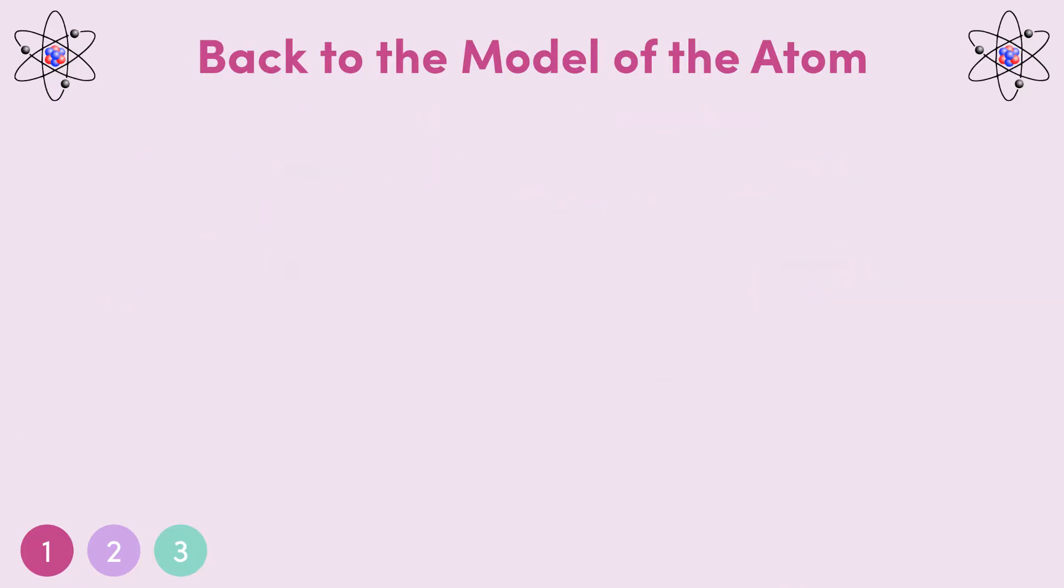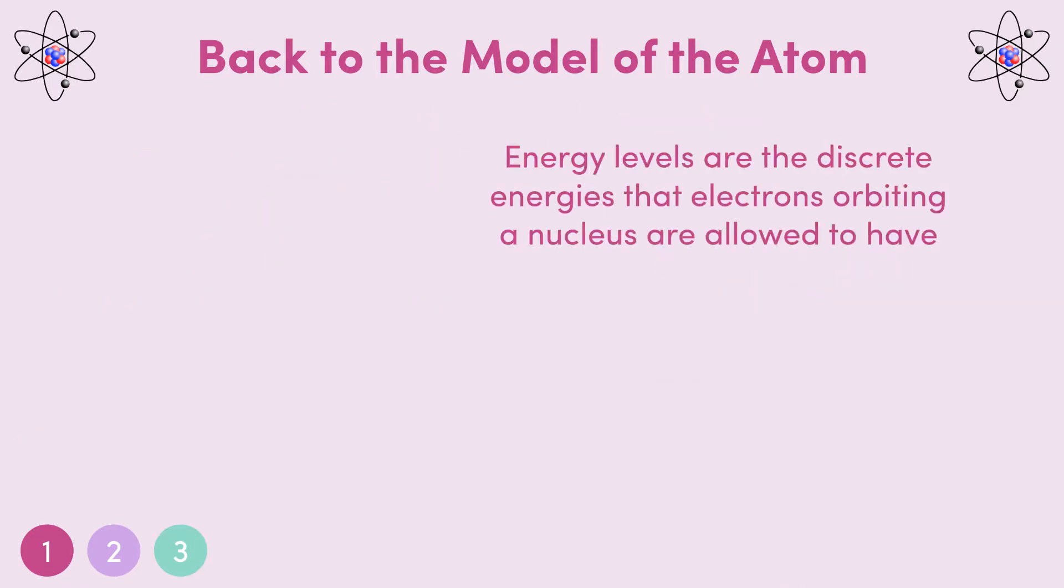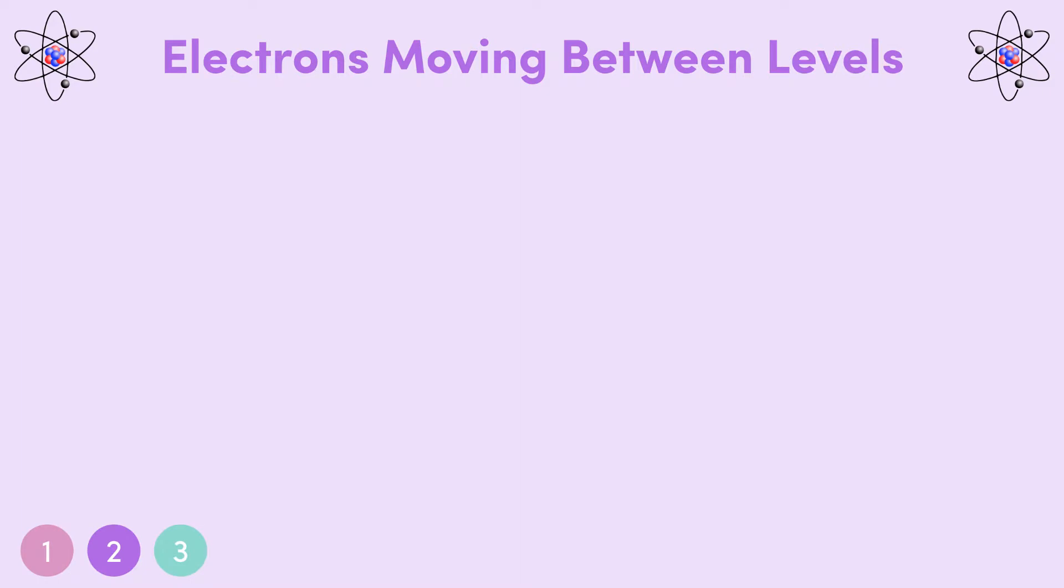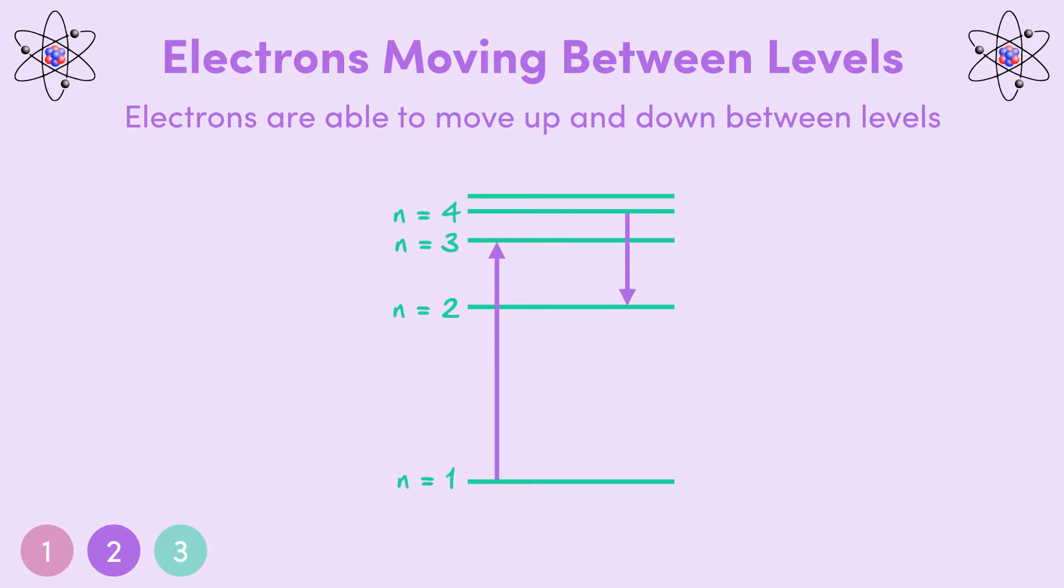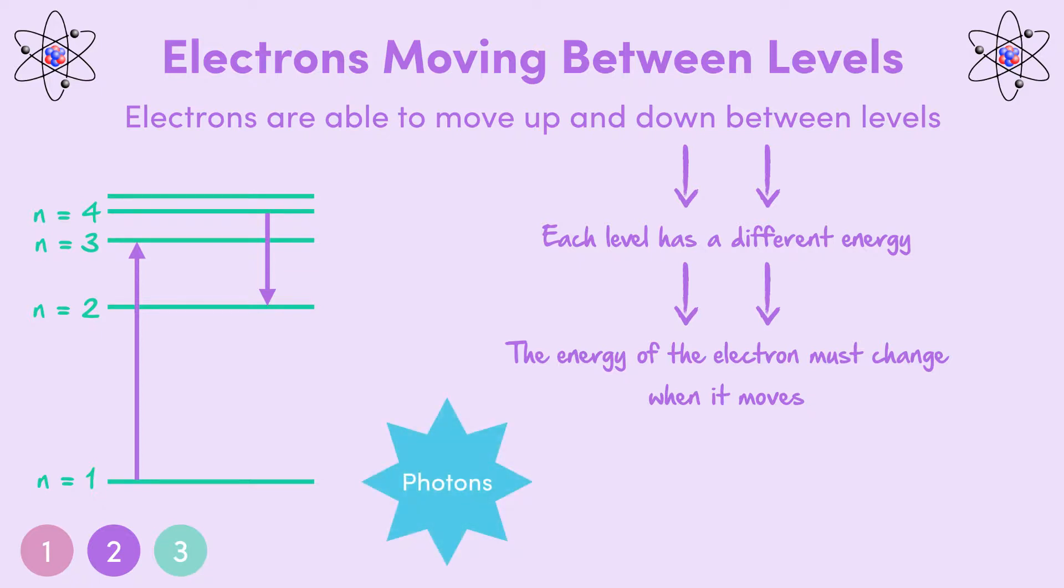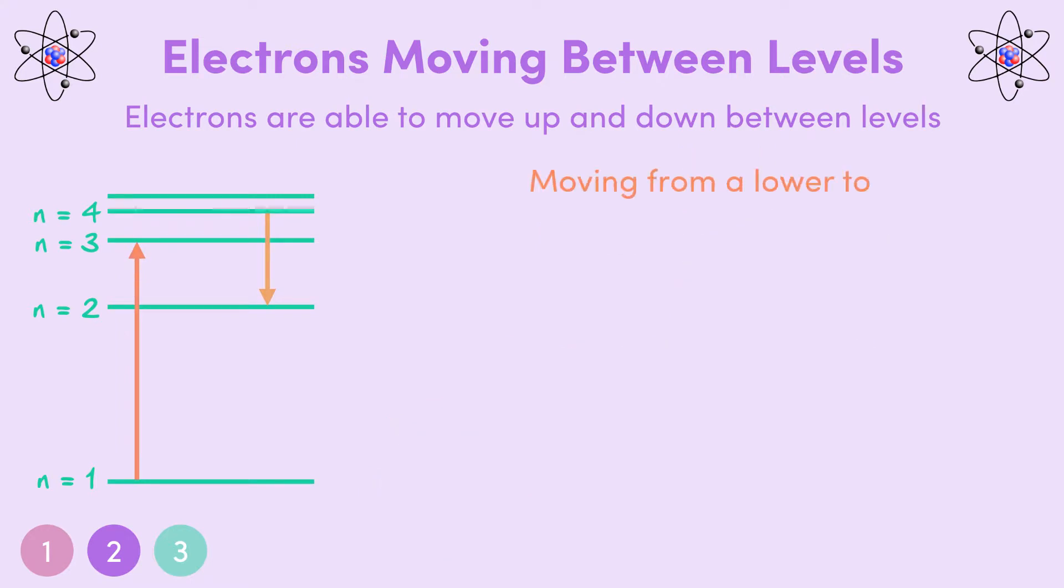So those are energy levels, discrete energies that electrons orbiting a nucleus are allowed to have. So then, the next question that might be on your mind is, are they stuck in one level forever? Well, to put it simply, no. The electrons are able to move up and down between the levels. But it's not as easy as skipping up or jumping down. Since each energy level has a different energy, the energy of the electron must change when it moves. And the way this works is with photons. Remember that photons are the particle form of electromagnetic radiation, and can be thought of as packets of energy. So, if an electron wants to move from a lower level to a higher one, it must gain energy. So it needs to absorb a photon. And this is called excitation.